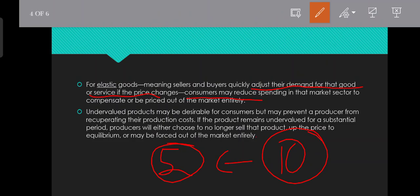If the product remains undervalued for a substantial period of time, producers will either choose to no longer sell that product, raise the price to equilibrium, or may be forced out of the market entirely. That means the producer will not sell that product.